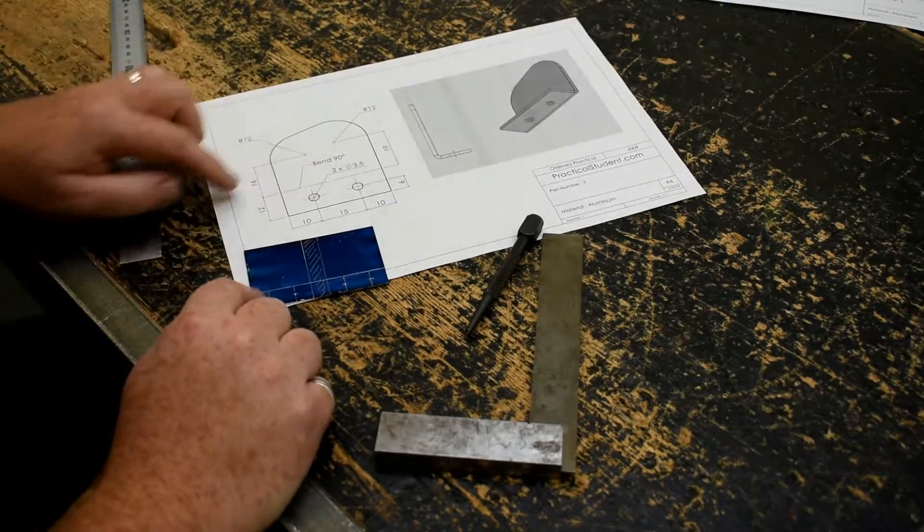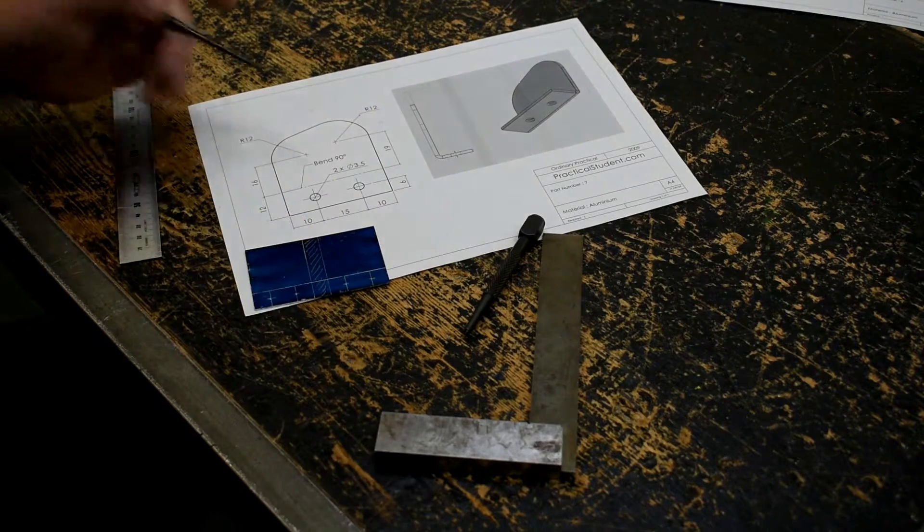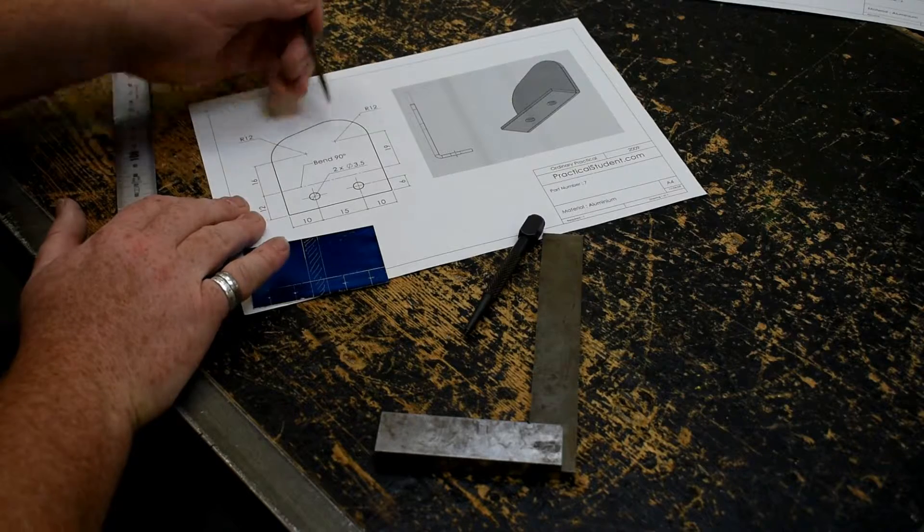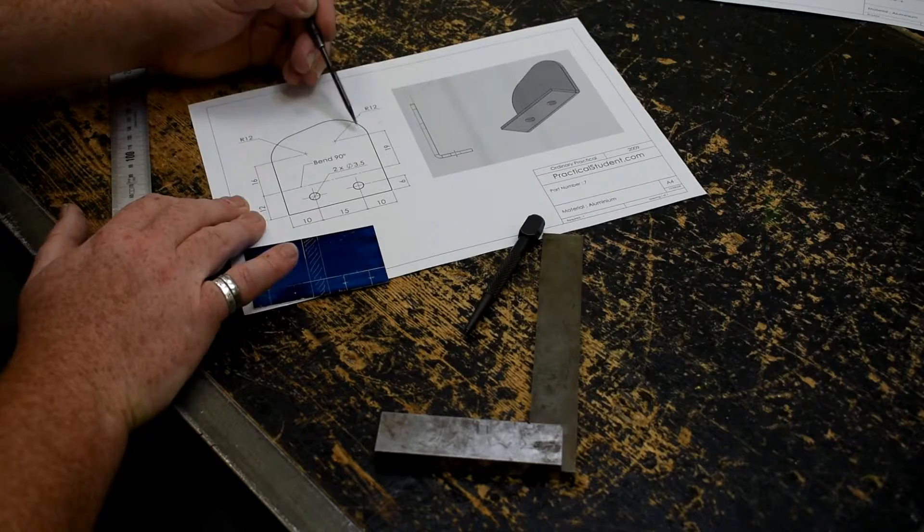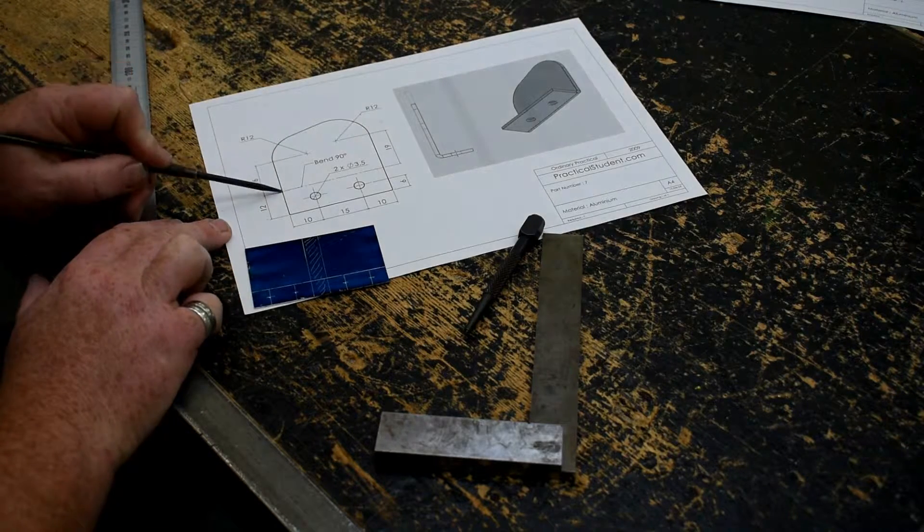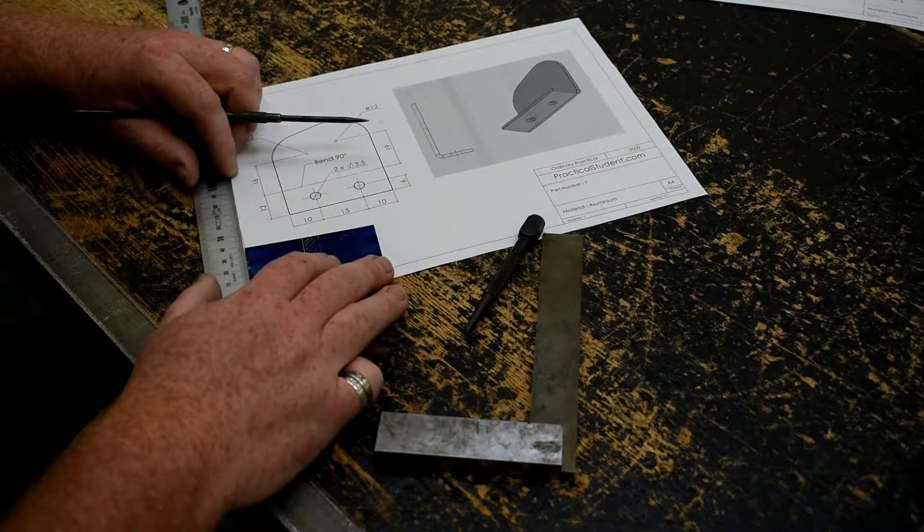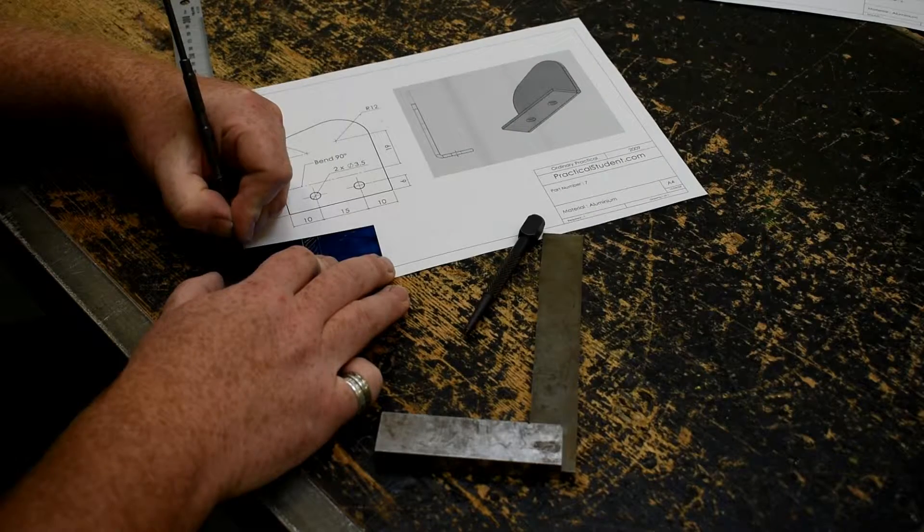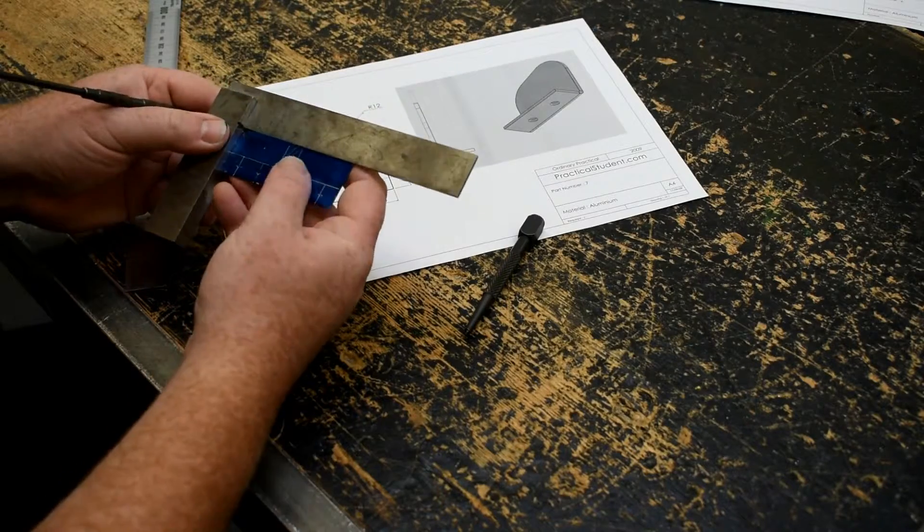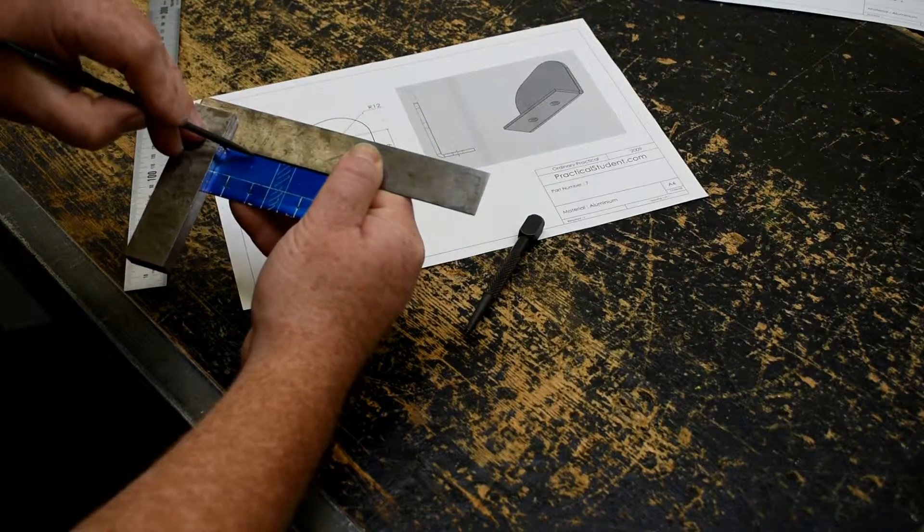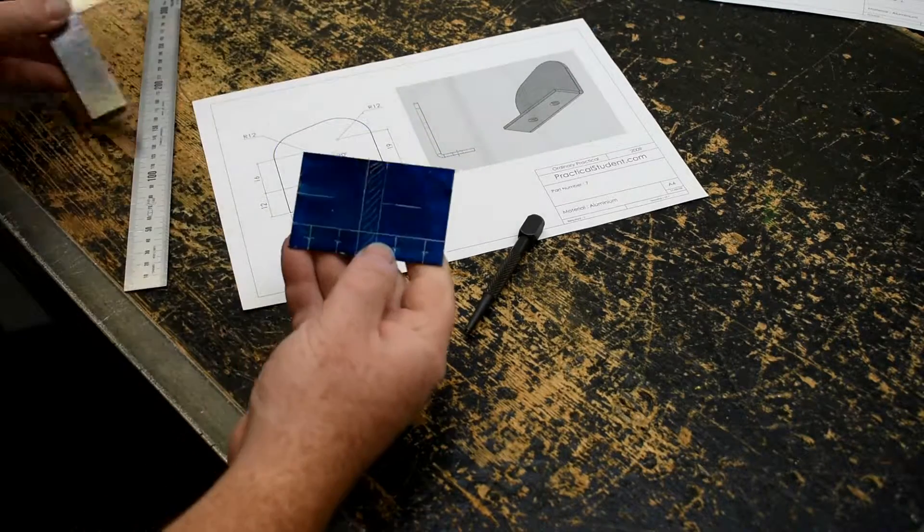That's the bottom section done for each one. It's going to be bent along that line. Now we need to worry about these curvy sections up the top. They're parts of circles. What a lot of people get caught out on is that they're actually on different heights. The first circle is up 16 millimeters, so I'm going to measure up 16 millimeters and draw a line with a T square about halfway across on both squares.